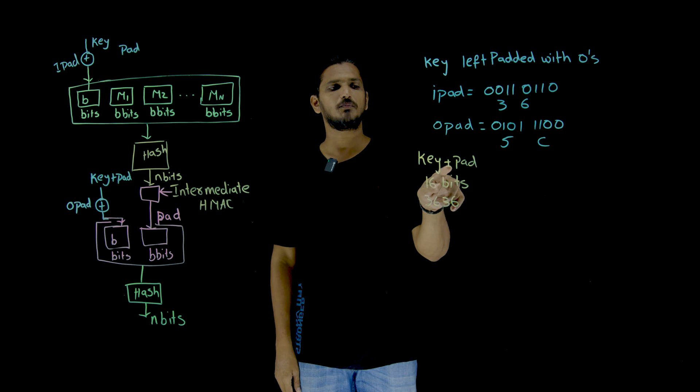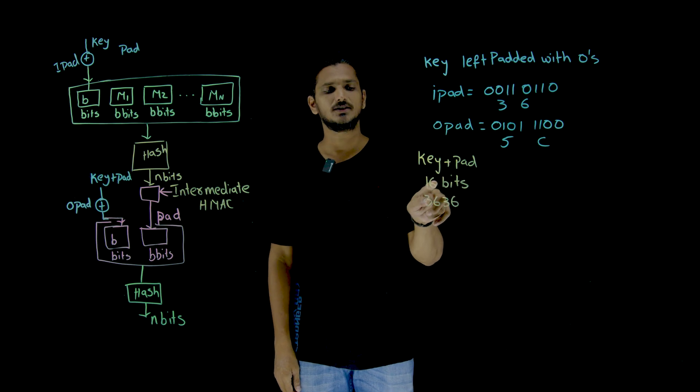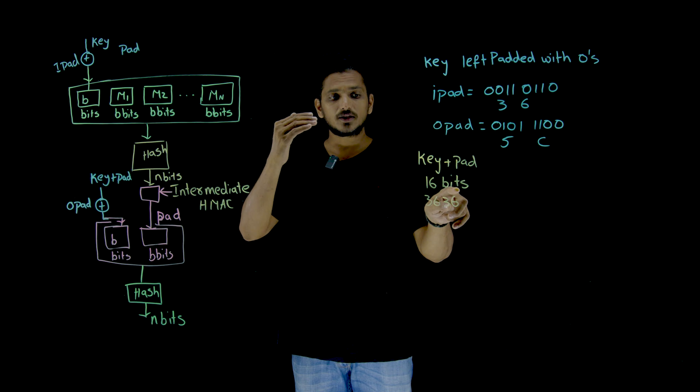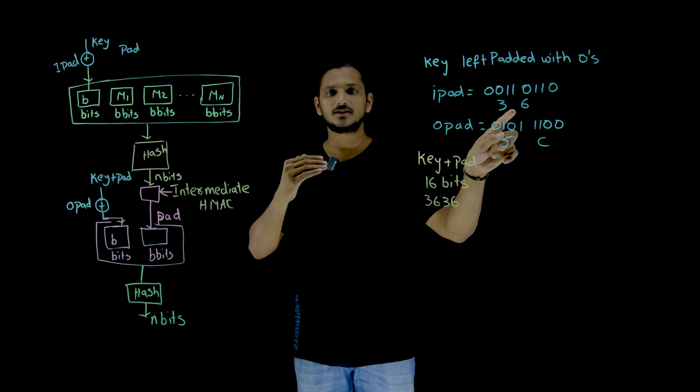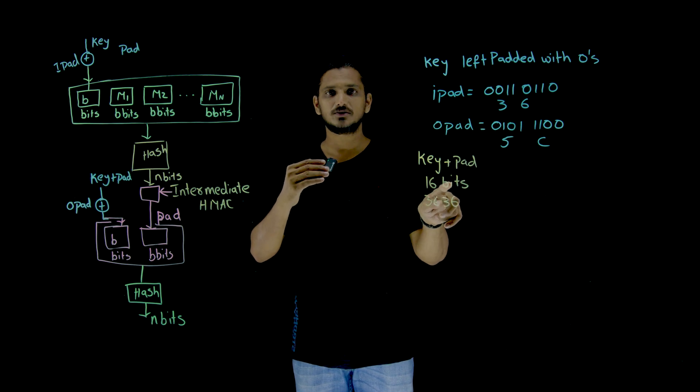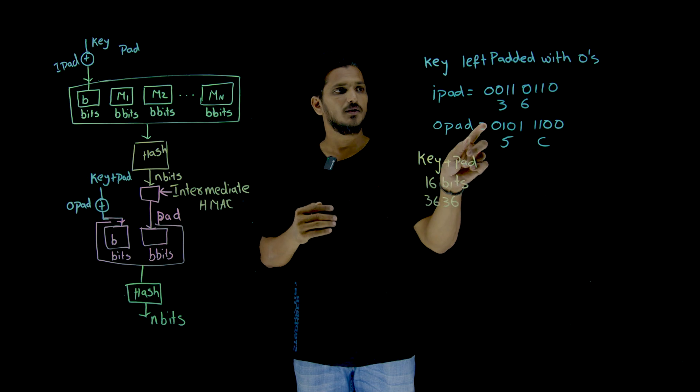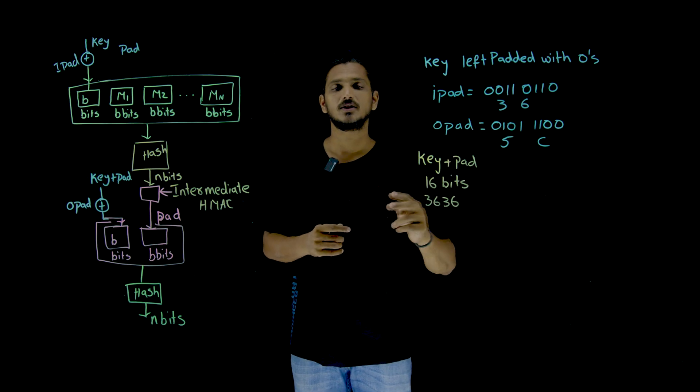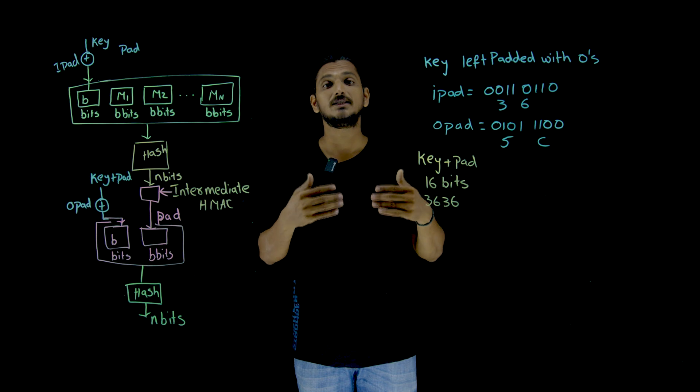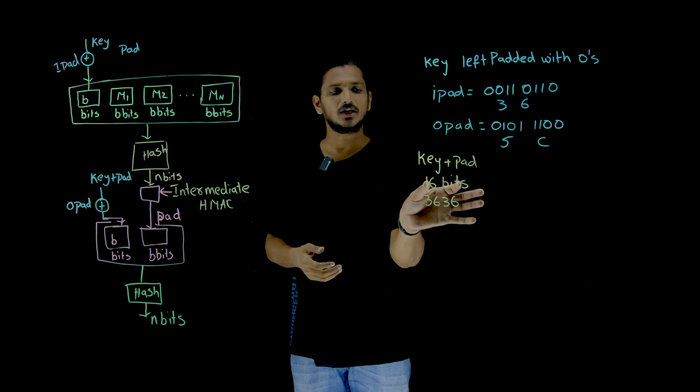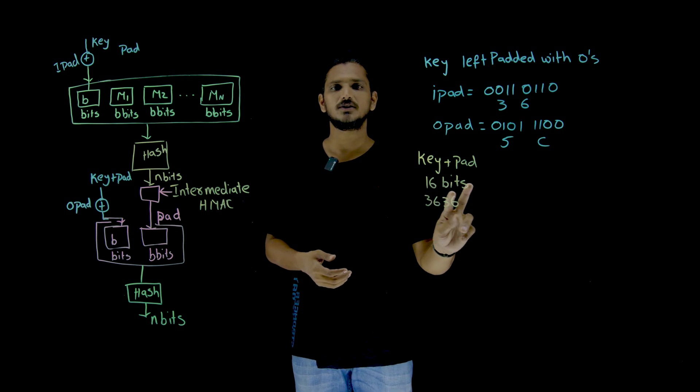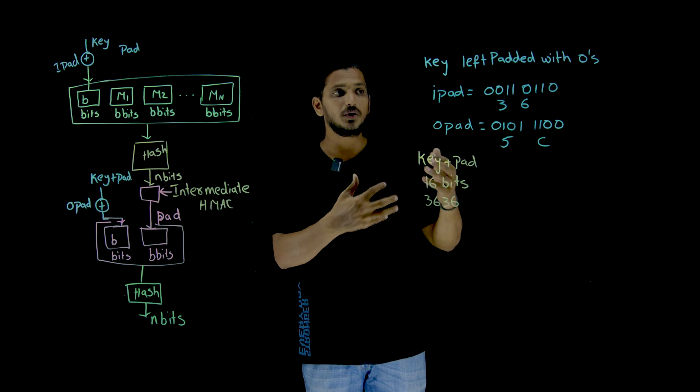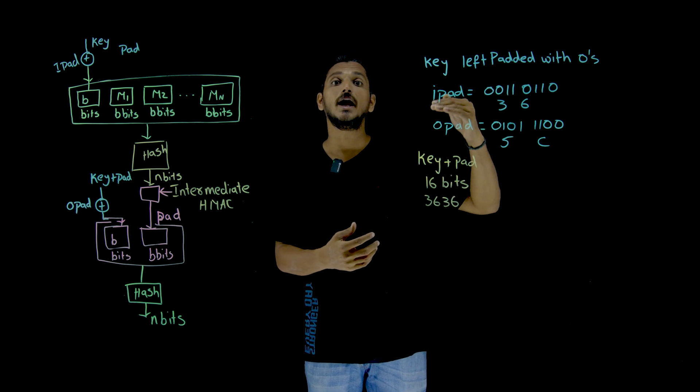We repeat this iPad value b by 8 times. Suppose if our key plus pad is equal to 16 bits, in order to do exclusive OR with 36, this 16 bits should be exclusive OR with because this is only 8 bits. So 3636 repeat 2 times will make it as 16 bits. If it is 32 bits, 36363636.